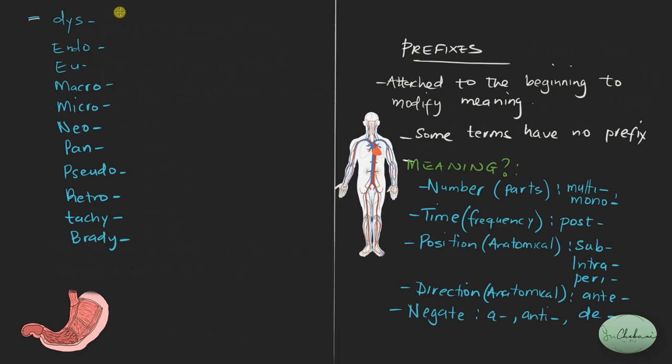Dys means usually to be used in the context of pain. So it could mean painful. It can also mean difficulty or abnormal. Depending on the context, it may have all these different types of meanings. And so once we go through the studying systems, you'll find that you'll come across words like dysmenorrhea, dyspnea, which means difficulty breathing.